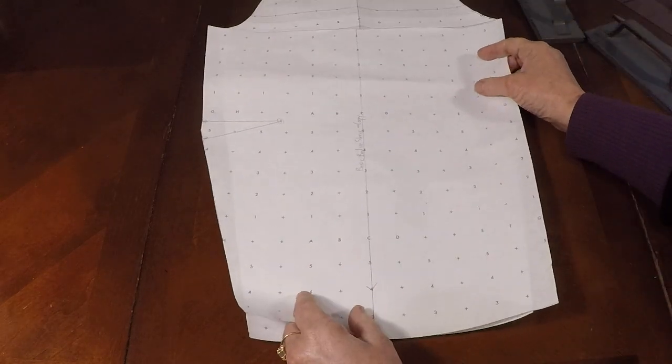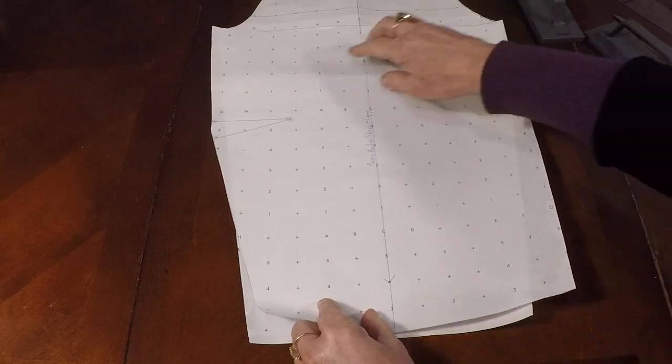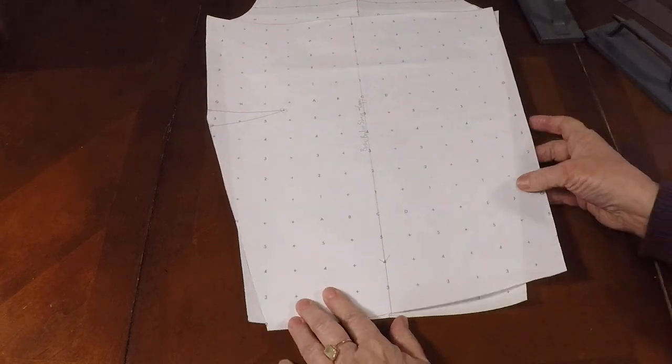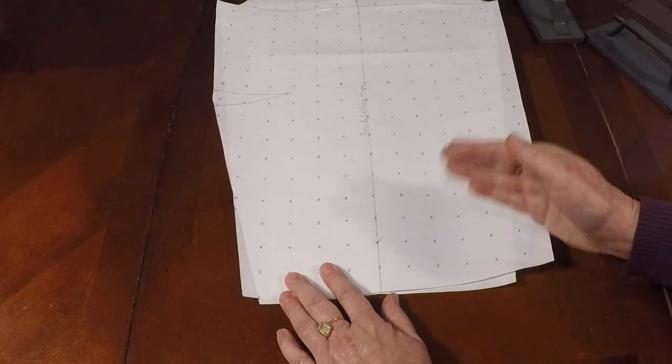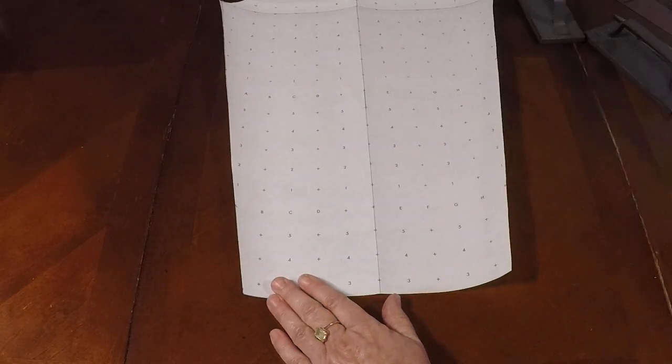And now we have the sleeve with no dart. And we've dropped it. And here's the lower part of the sleeve with an elbow dart. You can see that basically it goes over to the side and up a little bit. There we go.